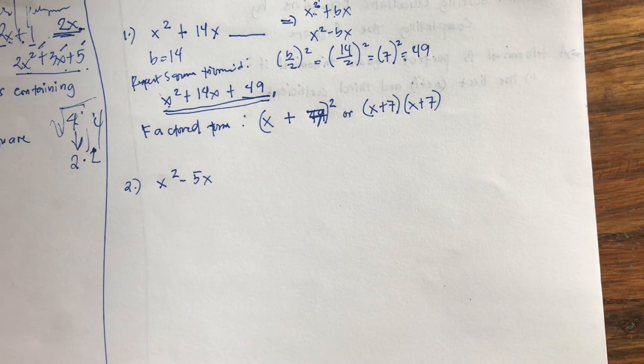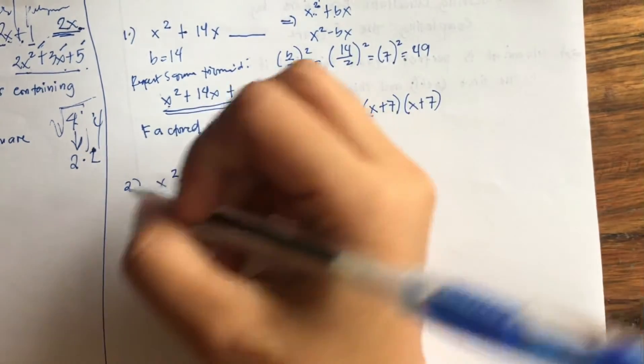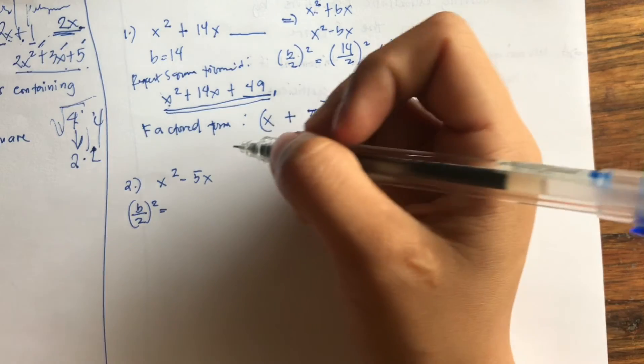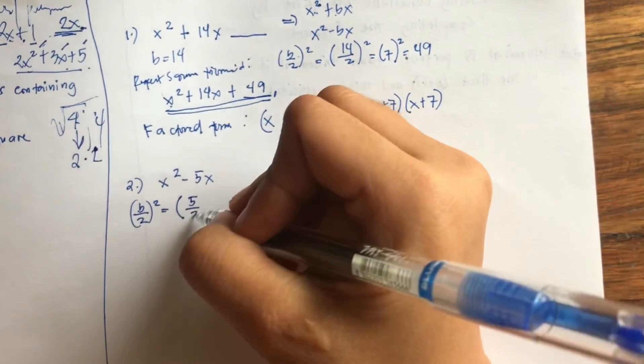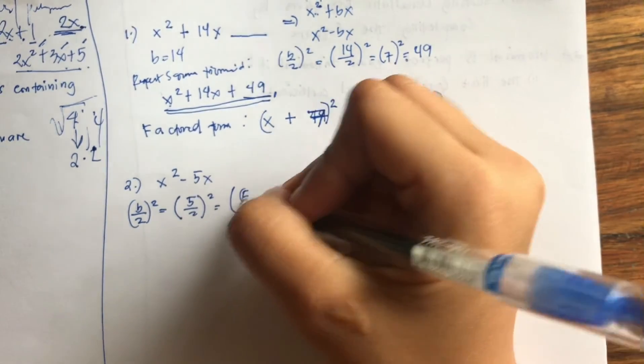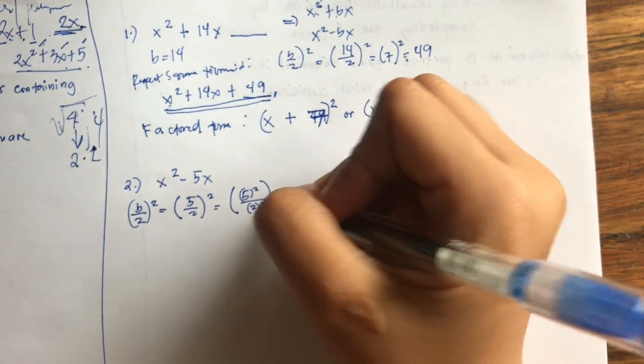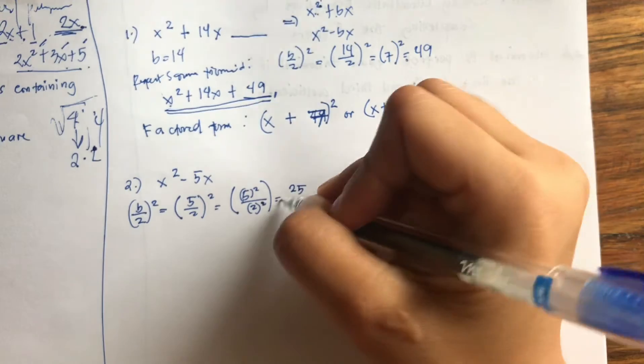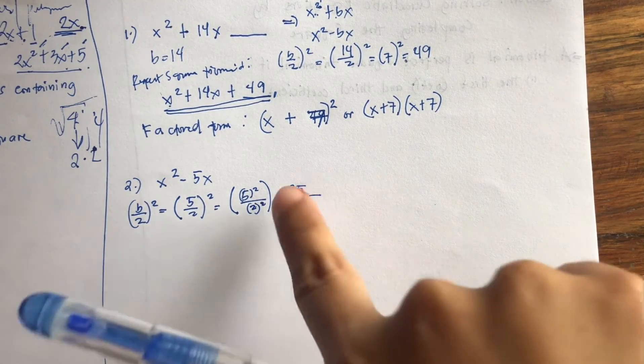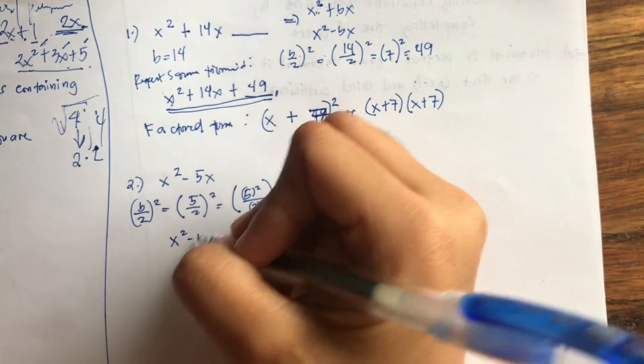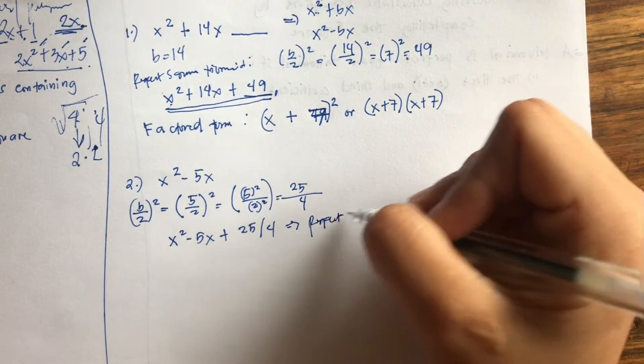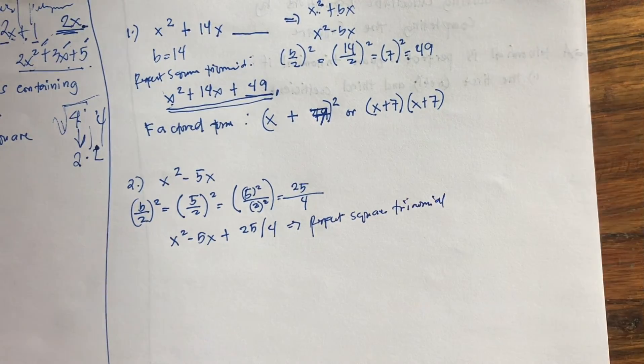So first we have to create a constant which is of the form b over 2 squared. Now the value of our b here is 5. We simply have to substitute that. We get 5 over 2 squared. So 5 over 2 squared: substitute 5 squared, and then in the denominator, square that too. So 5 times 5, that is 25, and 2 times 2, that is 4. So we have the constant that we are going to add in the given expression, which is 25 over 4. So from here, from x squared minus 5x, we add 25 over 4. So this is our perfect square trinomial.